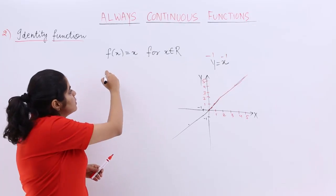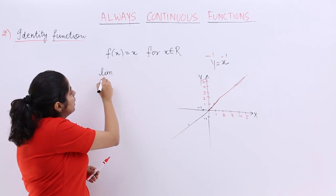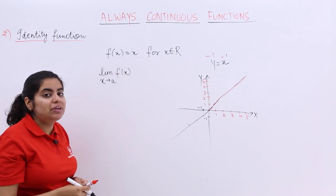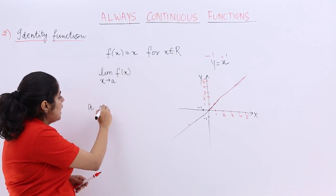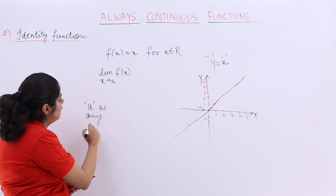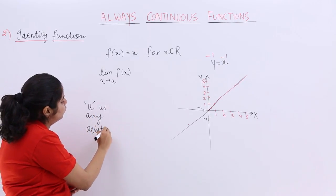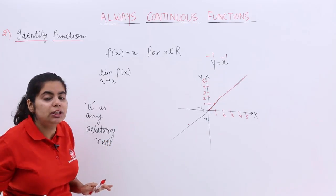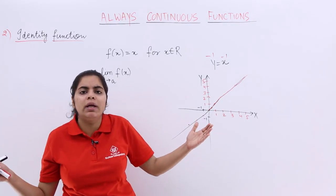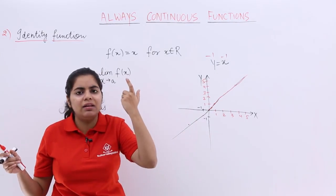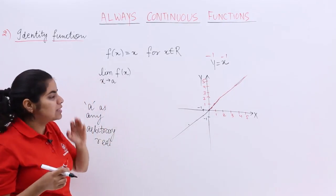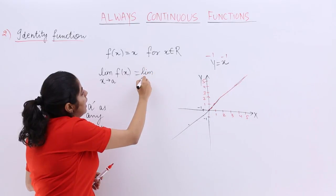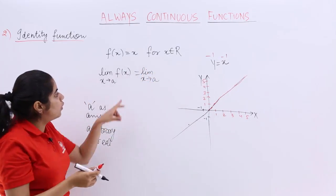Now for verification, I take the limit as x tends to a of f(x), where I have taken a as any arbitrary real, as we did in the previous proof. Any arbitrary real number, because if we have the whole domain of real numbers, we can pick any real number.